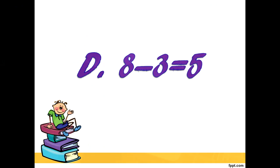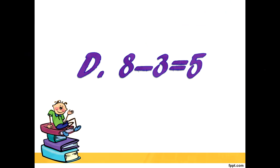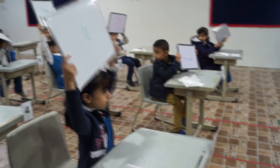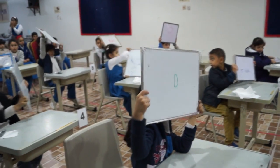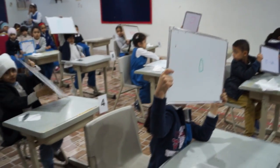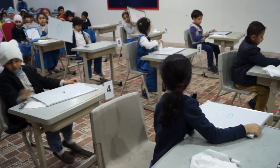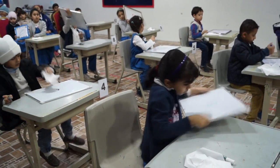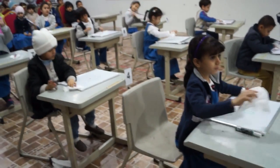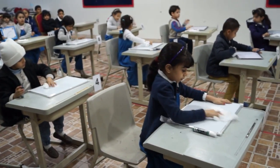The correct answer is letter D, 8 minus 3 equals 5. Number 1, correct. Number 2, no. Number 3, correct. Number 4, correct. Number 5, correct. Number 6, not correct. Number 7, correct. Number 8, correct. Number 9, correct. Number 10, correct. Number 11, not correct.